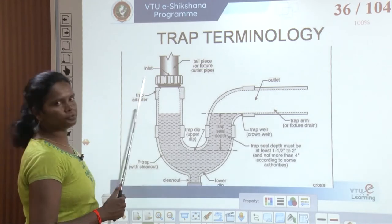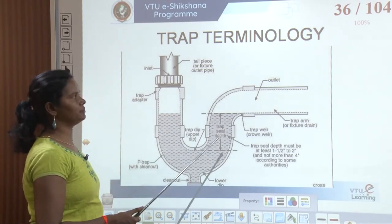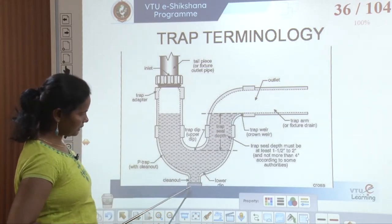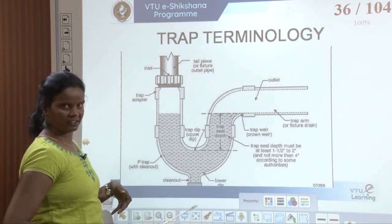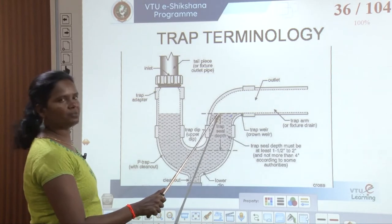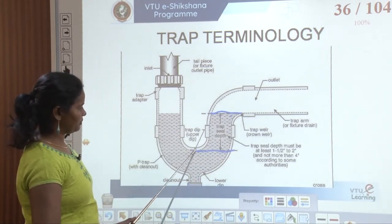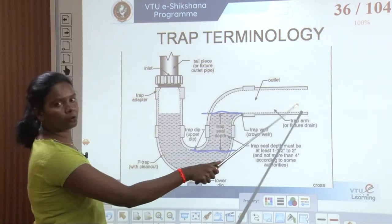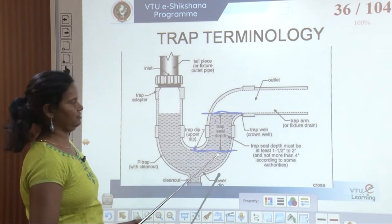The different terminologies of traps include the inlet pipe, the water seal which is compulsorily used, and the clean-out — a cap that can be opened to flush out and clean the water, then closed to refill the water seal. The trap seal depth is always measured from the bottom of the outlet pipe to the upper surface of the trap dip, and that should be 50 mm. The lowest point of the trap is called the dip.